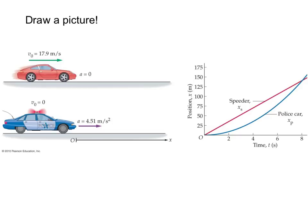Alright, the sketch here shows the two cars at the moment the speeder passes the resting police car. At this instant, which we'll call t equals zero, so let's go ahead and say when they pass, that is time equals zero.